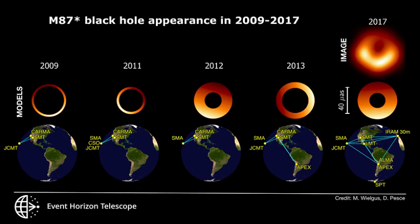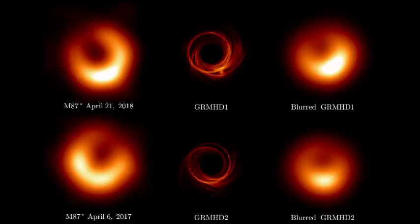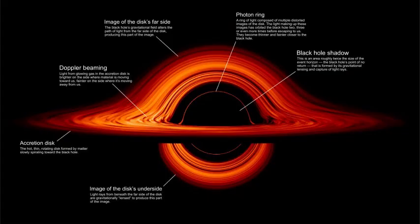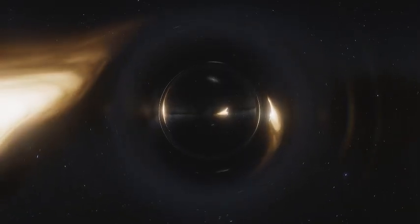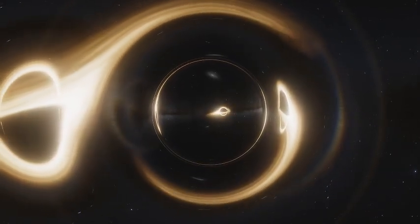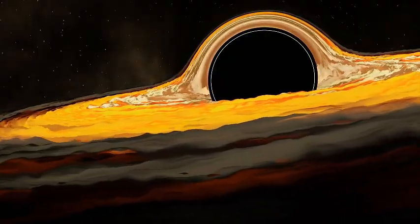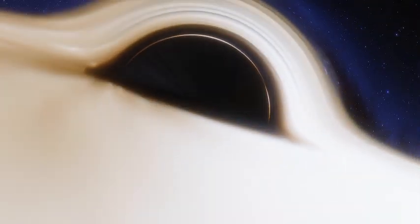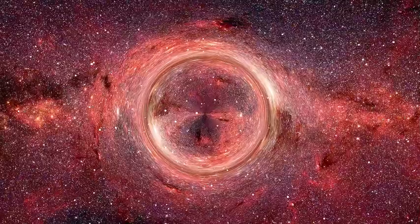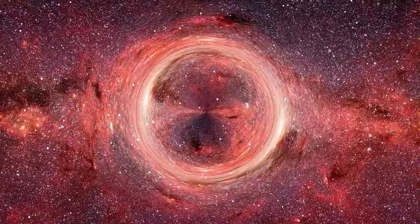That changed in 2019, when the Event Horizon Telescope gave us humanity's first direct glimpse of a black hole's shadow. Not the black hole itself, but the dark silhouette it carved against the glowing plasma swirling around it in galaxy M87, 55 million light years away. It was described as photographing a donut in space. A glowing ring of hot gas wrapped around a dark center, a void where nothing escapes.